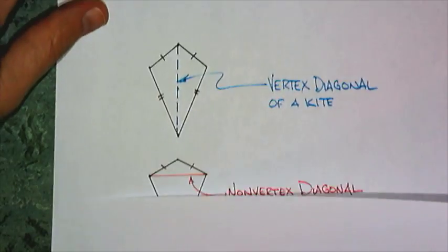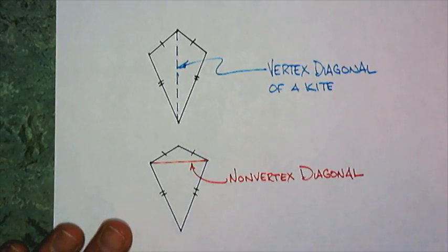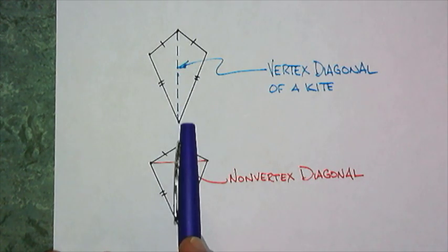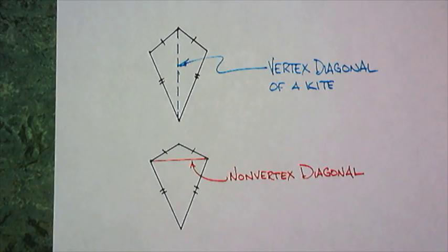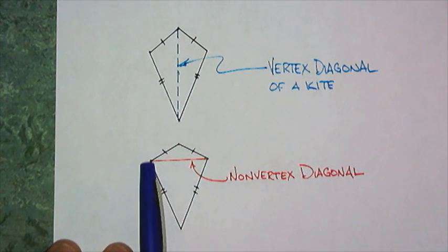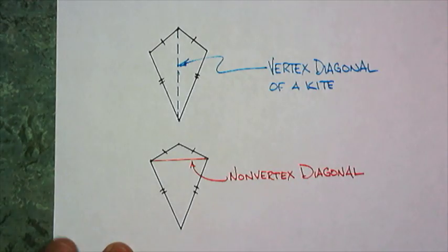And if I make diagonals, I can connect the vertex angles to form a vertex diagonal, and I can connect the non-vertex angles to form the non-vertex diagonal.